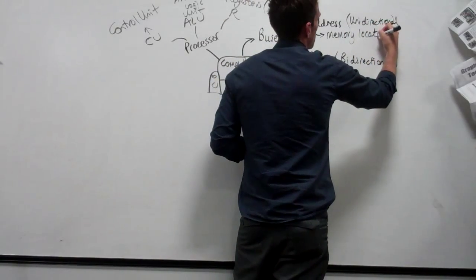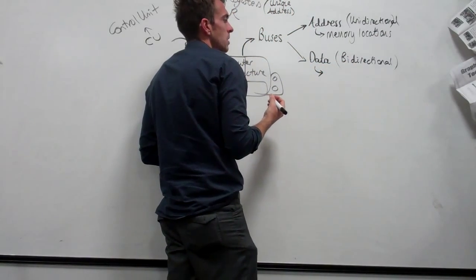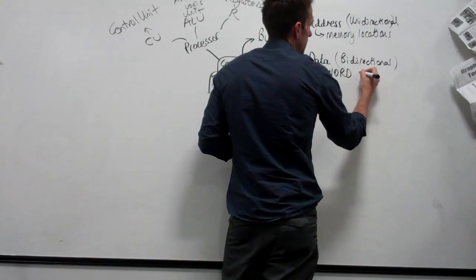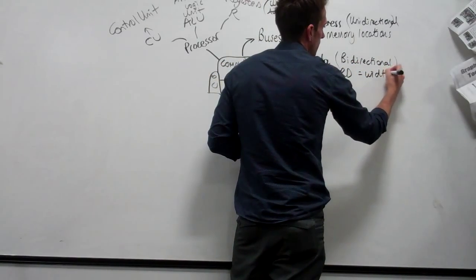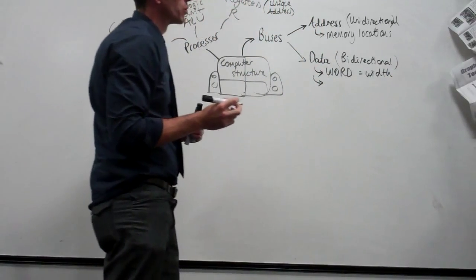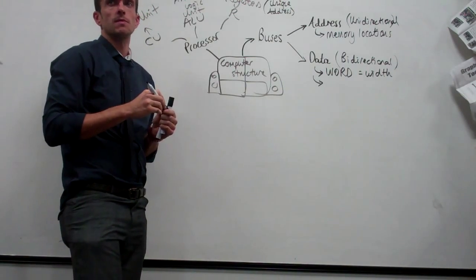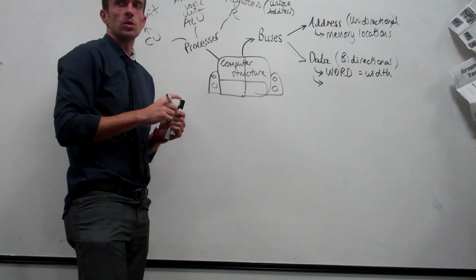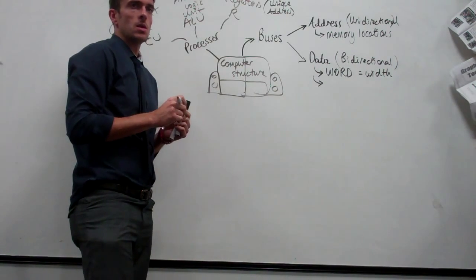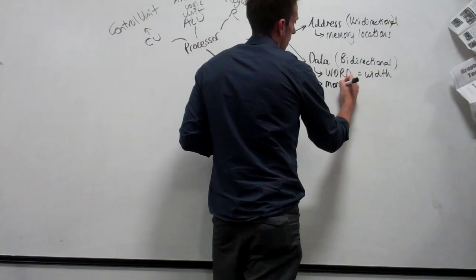There's a wee bit more to know about the data bus. What does the size of it commonly get called? Word. The word equals the width of the data bus. It's one method of improving performance. What can you do to improve performance? Increase it. What does increasing the width do? It means more data can be transferred at the one time.